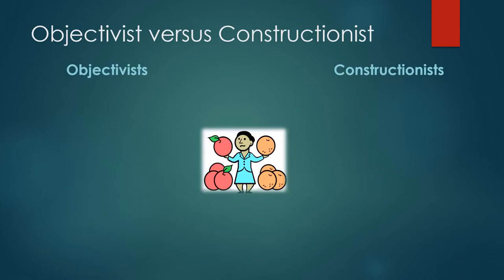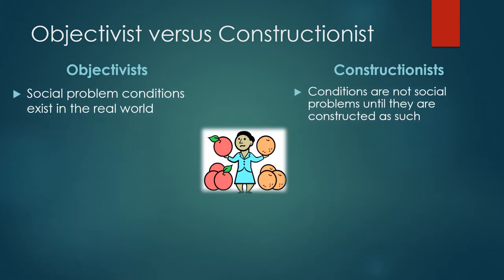In this chapter, Lowski compares and contrasts what objectivists are looking at versus what constructionists are looking at. The main concern of objectivists is to document and verify what social problem conditions exist in the real world, to demonstrate how widespread these problems are, how long they have persisted, and so forth. From an objectivist point of view, you look at a lot of data and try to describe these conditions accurately.